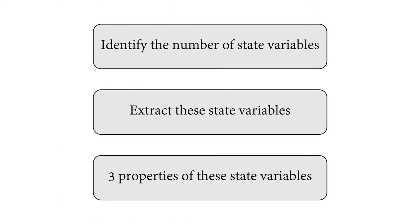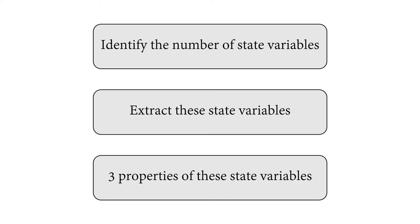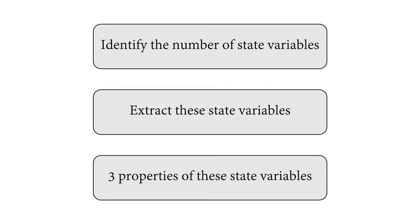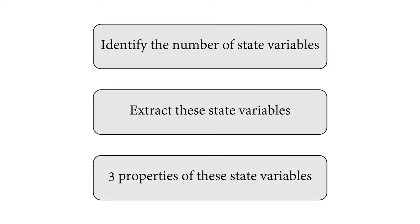In the rest of this video, we will first introduce how our approach can identify the minimum number of variables that govern the system dynamics from video frames. We then discuss how we can extract these potential variables with deep neural networks. Finally, we will present three significant properties offered by these discovered state variables for long-term dynamics prediction.